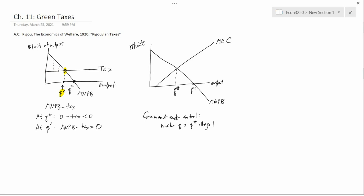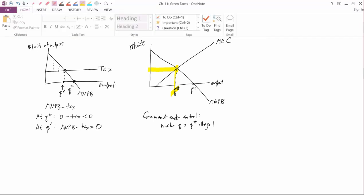So now on the right-hand diagram, if we know we want to get Q star, then I can find a tax that will generate Q star by starting with Q star, going up to the MNPB curve, there's the MNPB curve. Forget MEC, that's not relevant here to the firm's behavior. We go to the MNPB curve and then over, and so that would be the amount of the tax.